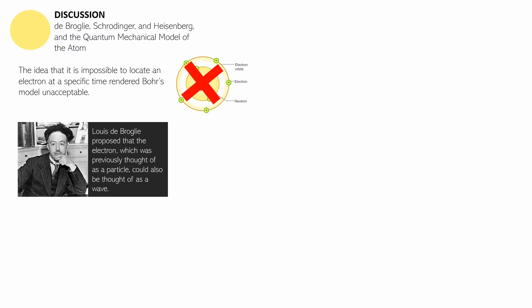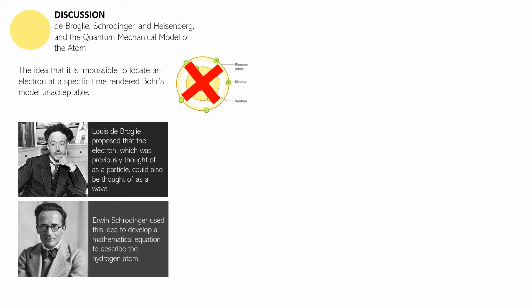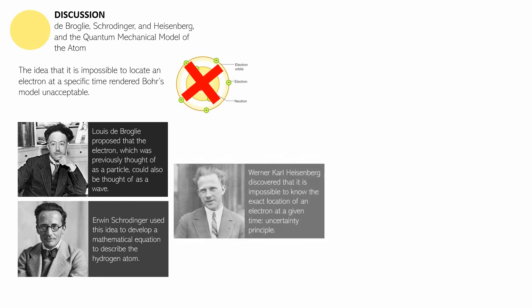It was closely followed by Erwin Schrodinger, who used that idea to develop a mathematical equation to describe the hydrogen atom, wherein the electron is going to behave as a wave. Lastly, Werner Karl Heisenberg discovered that it is impossible to know the exact location of an electron at a given time, so the uncertainty principle was affixed to his name.